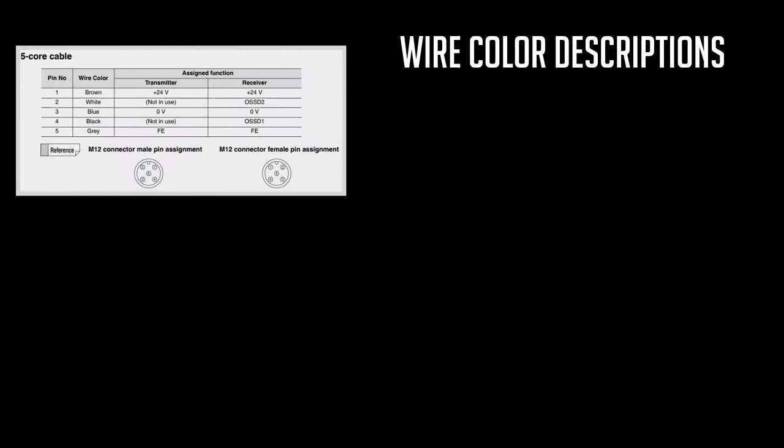There are three bare-lead wiring options with the GLR light curtains, the first of which, and most simple, is just a 5-core cable. This includes your power, brown and blue wires, as well as your OSSDs or safety outputs, black and white.